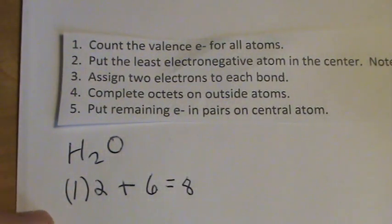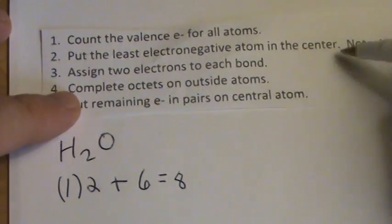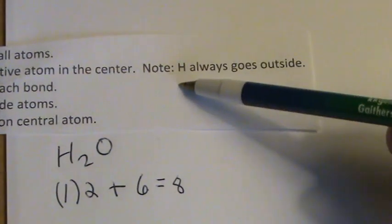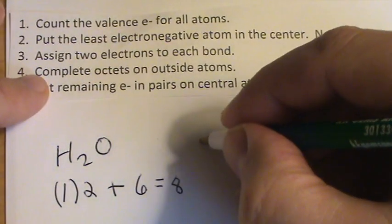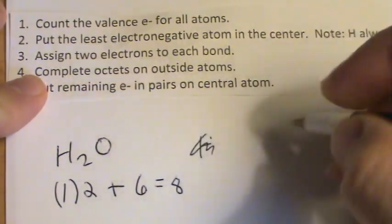We put the least electronegative one at the center. However, we always put hydrogen on the outside. So I'm just going to draw it. I'm going to move it over here to give us some more room.